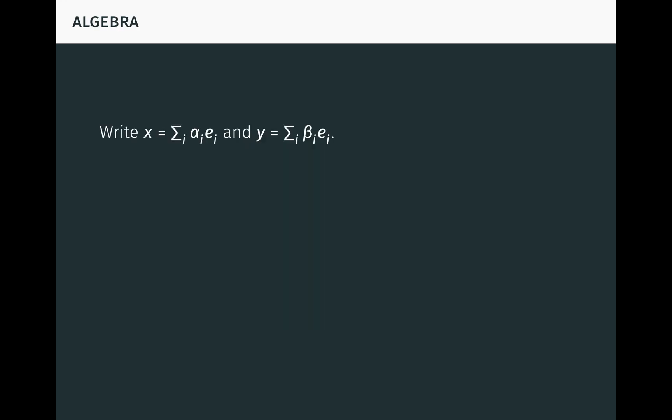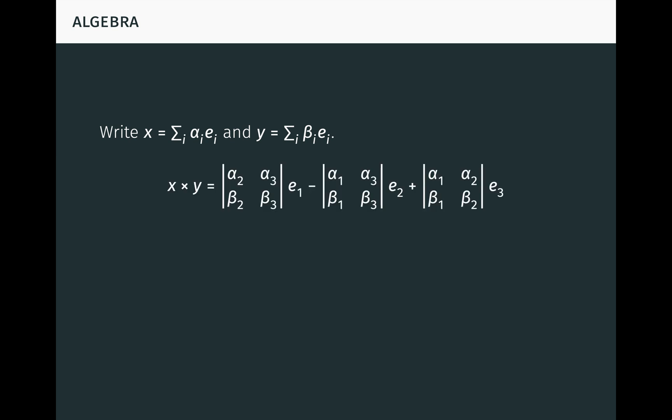If we write the vectors x and y in terms of coordinates, it follows from the algebraic properties of the cross product that we can compute the vector x cross y. This is sometimes written as a formal 3 by 3 determinant, so that it's easier to remember. But it's not a regular determinant because the e's are vectors, while the alphas and betas are scalars.